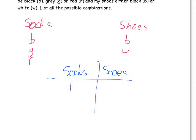My socks could be black and I could also have a black pair of shoes. My socks could be black but I could have white shoes. So what I do is go through each option on the left-hand side and match it with the ones on the right-hand side. I've got black socks with black shoes and then black socks with white shoes. Now there's no more things I can put my black socks with because we've only got black and white shoes.